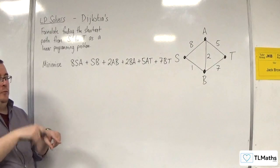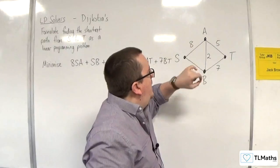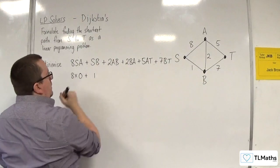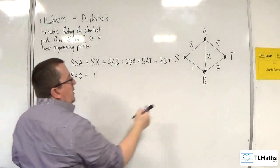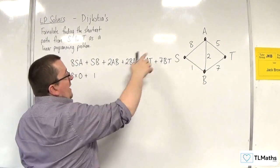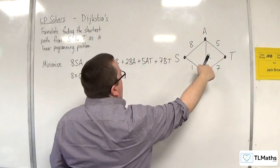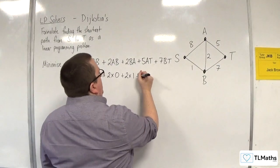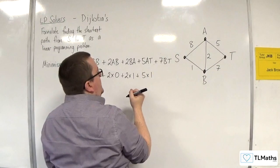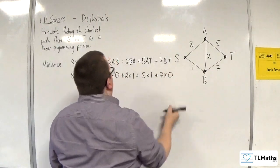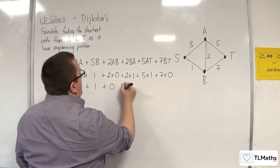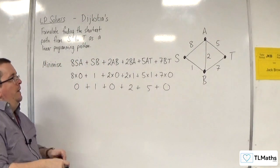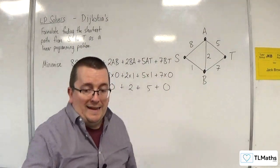Thinking back to what I know the shortest path is — S, B, B,A, A, T — that would be 8 lots of 0, plus 1 lot of 1. I'm not using A,B, so that's 2 lots of 0. I am using B,A, so that's 2 lots of 1. And 5 lots of 1 because I'm using A,T. But I'm not using B,T. So I would have 0 + 1 + 0 + 2 + 5 + 0, which equals 8. So this is what my objective function needs to be.